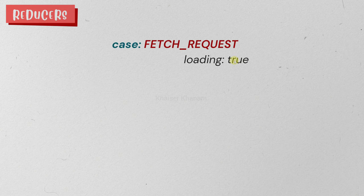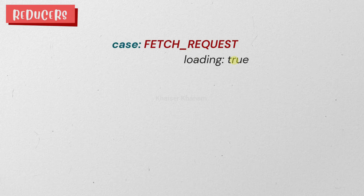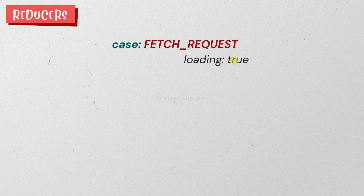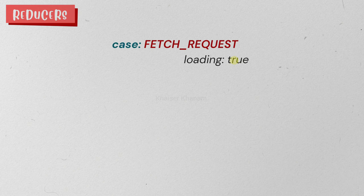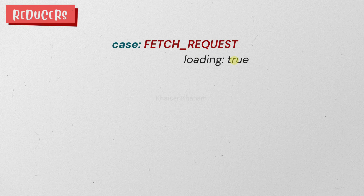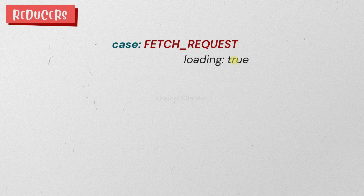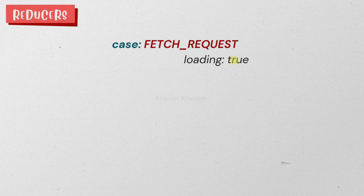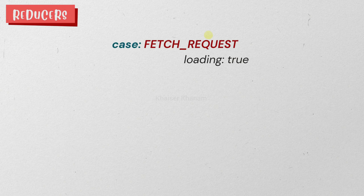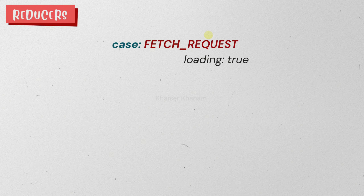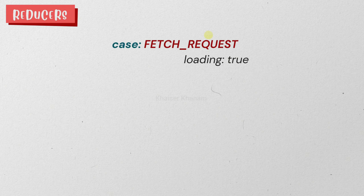Finally, we have the reducer. For each action type, we perform a different action and return the next updated state. For the first action, 'fetch request', loading will be set to true — because we have started fetching data and have not yet received any response. Once we start the fetch request, we set loading to true. If you have a loading spinner or want to display a message like 'data is getting loaded', you can display that to the user as an indication that data is being fetched from the API.